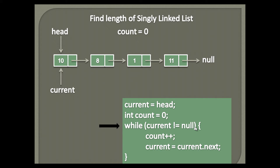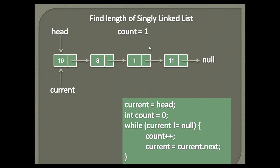when the current node becomes null, the list has reached its end and there are no more elements to count. Currently, the current node points to head, which is not null. Thus, the statements in the while loop execute. The first statement increments count by one, because current is not null, and signifies the list has one node. The count becomes one.